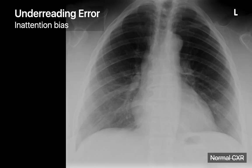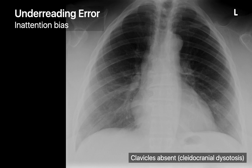Inattention bias not only predisposes a radiologist to miss the presence of an abnormal finding they aren't paying attention for, but it also predisposes a radiologist to miss the absence of a normal finding they weren't expecting either — like in this example where the clavicles were missing in a case of cleidocranial dysostosis.